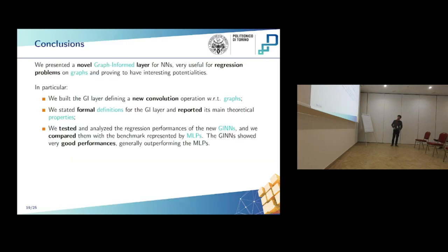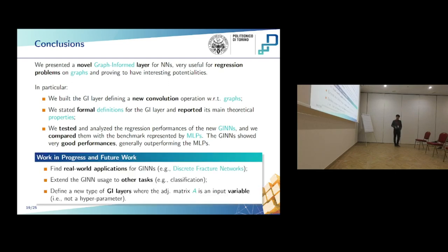In conclusion, we present our novel graph-informed layer for neural networks, useful for regression problems on graphs. We built the GI layer by defining a new convolution operation on graphs and stated formal definitions reporting the main theoretical properties. We tested and analyzed the regression performance of these new neural networks, making a comparison with the main benchmark represented by MLPs, obtaining very good results. Concerning future work, we are currently applying GINNs to real-world applications — in particular to discrete fracture network models — and extending their usage to other tasks such as node classification.